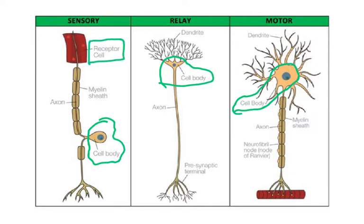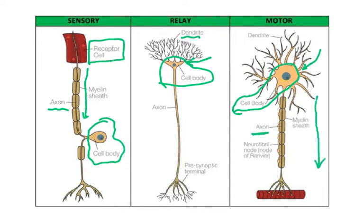Sensory neurons connect receptors — such as temperature receptors and touch receptors in the skin, or light-sensitive receptors in the retina — to the relay neuron. The axon connects the receptor to the cell body. A relay neuron connects the sensory and motor neurons; it also has a cell body and dendrites, which are short projections. The motor neuron ends at a muscle or a gland.